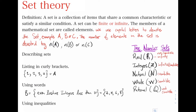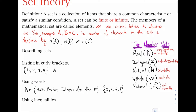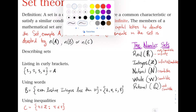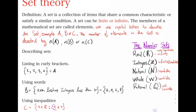Continuing, we can also use inequalities to describe our set. For example: {x | x ∈ Z, x ≤ 4}, which means x is an integer such that x is less than or equal to 4. This is another way to define or describe a set.